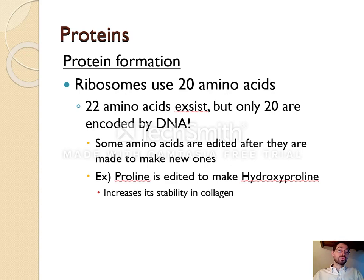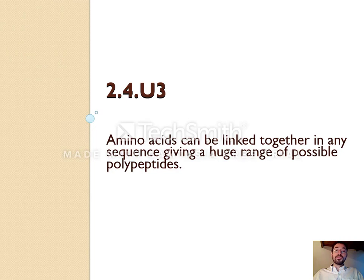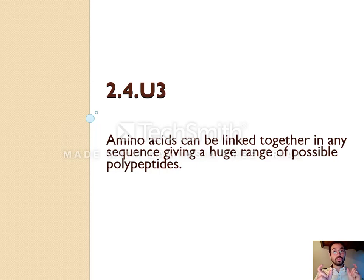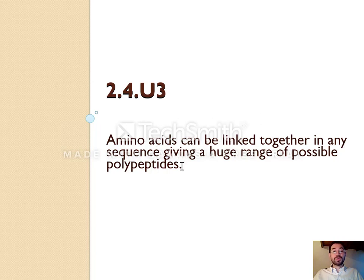There are actually 22 different amino acids, but not naturally — the number you need to know is 20, and basically the others can be edited to make the extras. So amino acids can be linked together in any sequence, giving a huge range of polypeptides. In my previous video I compared monomers to Lego pieces or bricks, and I talked about how these pieces can be put together to make bigger molecules. Amino acids are the Lego pieces of proteins.